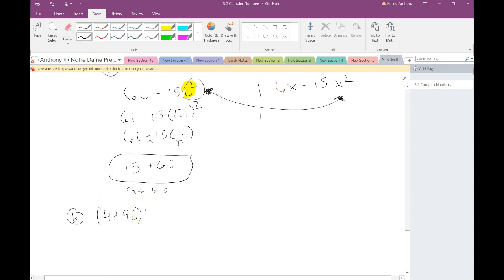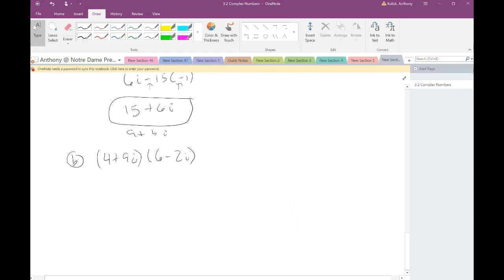So let's say we have 4 plus 9i times 6 minus 2i. Well, again, we said that we can treat all these problems just like if we had x's. So if I did this, what I would do is I'd use foil.